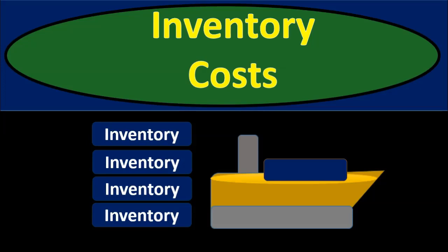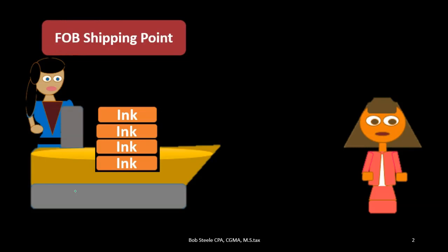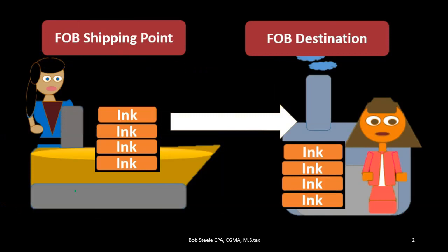Now we'll discuss what should be included in inventory costs. Clearly the cost of the inventory is included, but there are other components to keep in mind. One is shipping costs, which typically relates to the terms of FOB shipping point or FOB destination — a common question in practice.